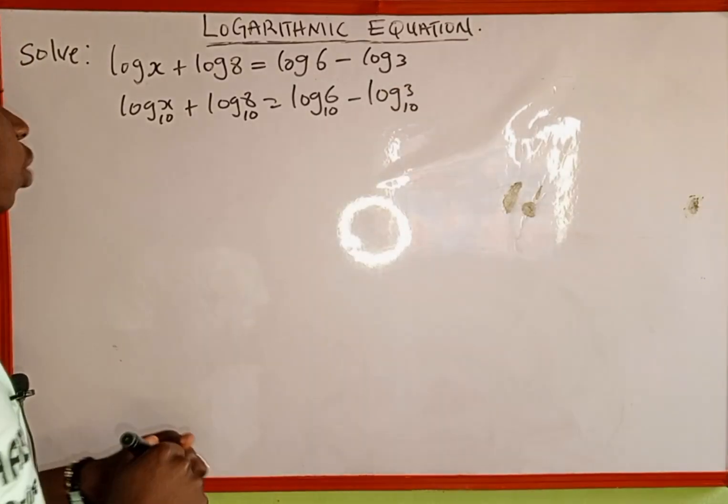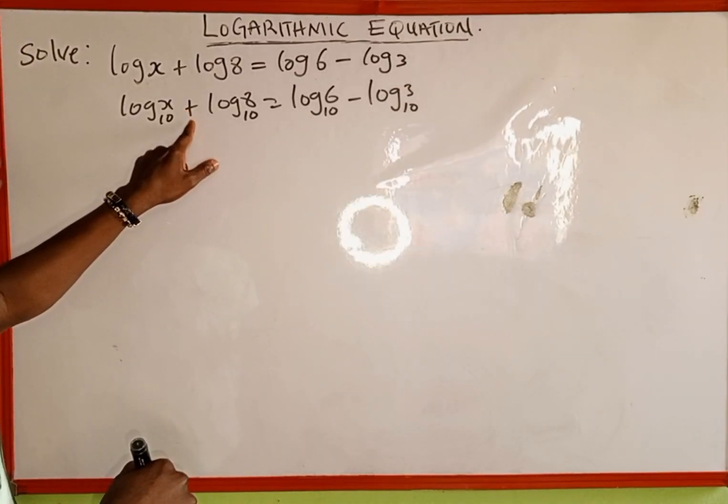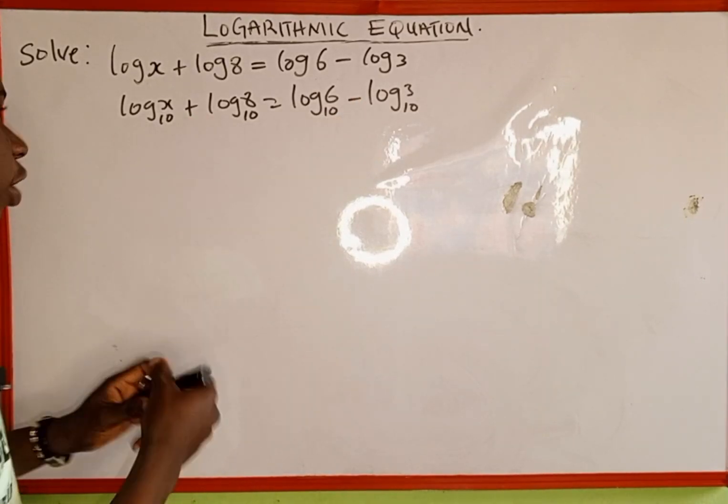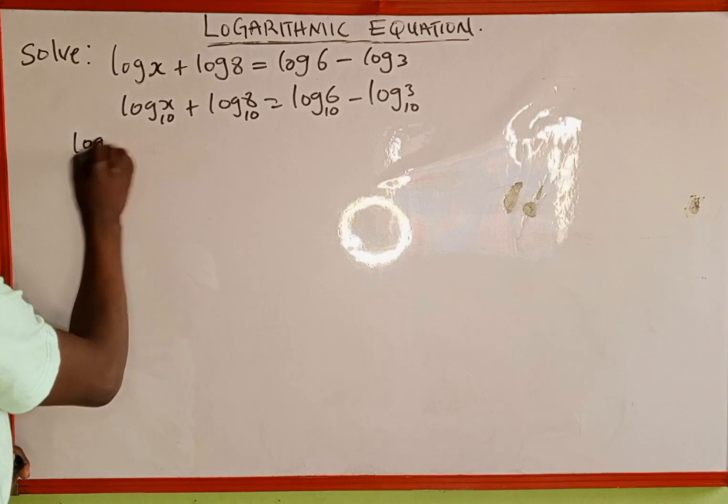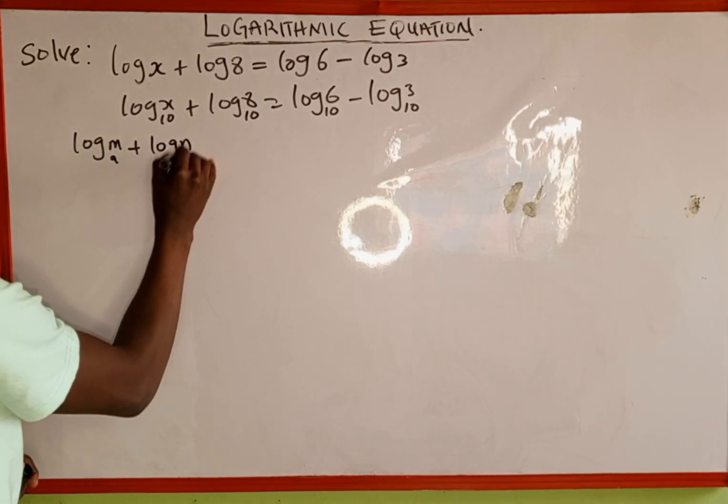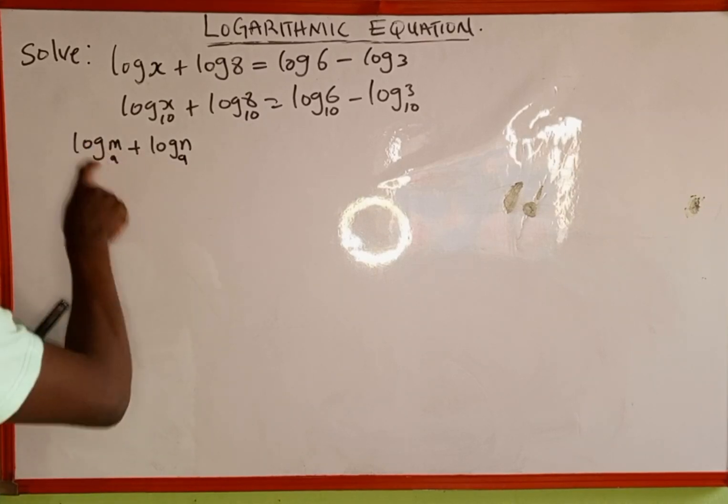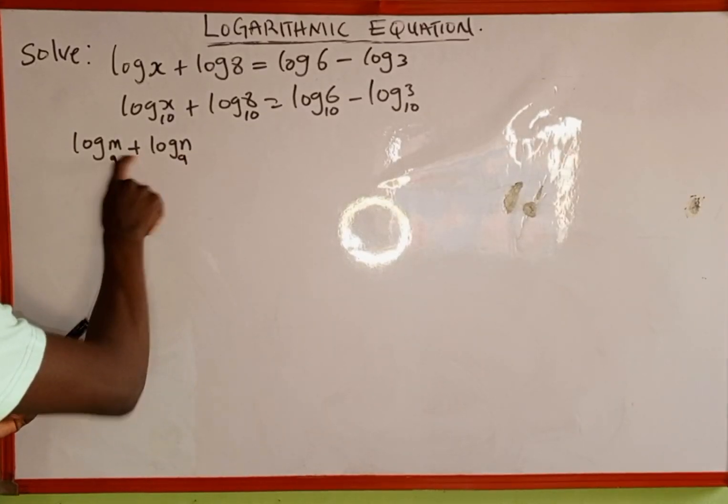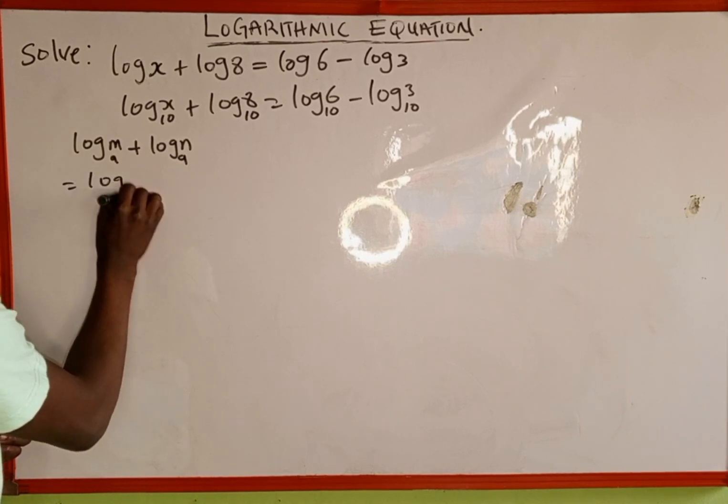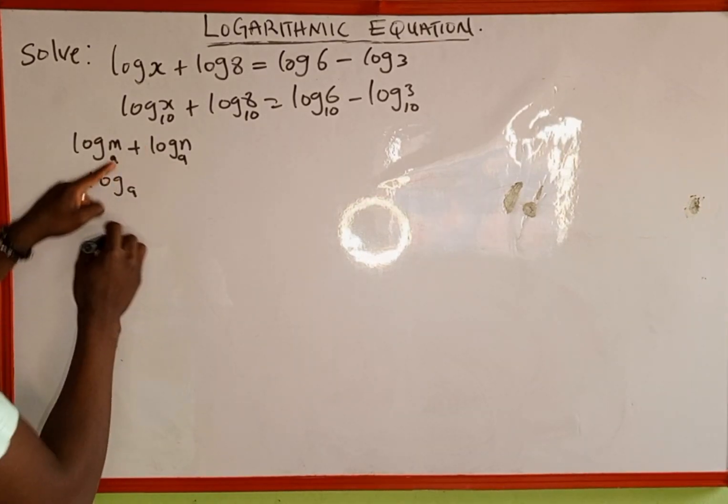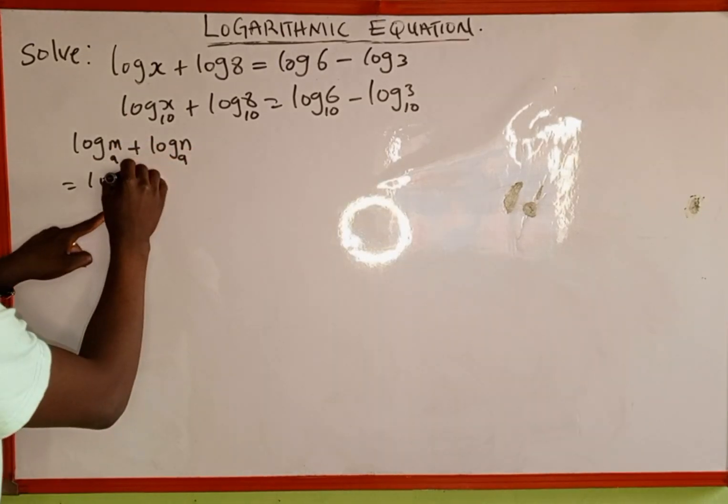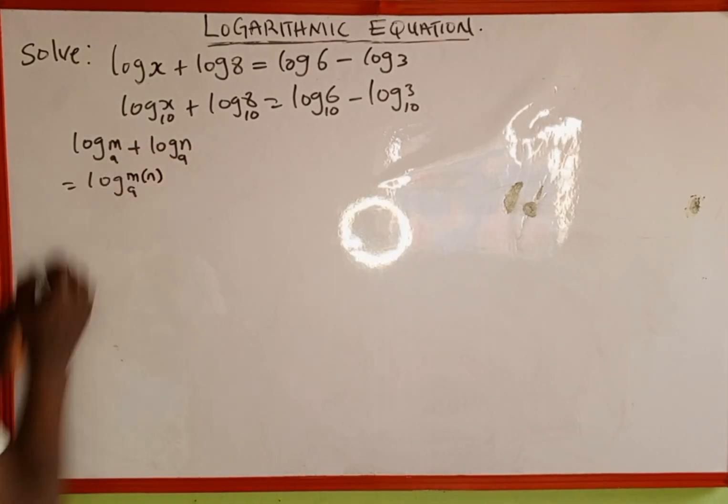Another thing we are going to recall is the addition property of logarithm and the subtraction property of logarithm. We have log of m to base a plus log of n to base a. Since we have log to base a, log to base a, and this is addition, then this is the same as log to base a. We write log to base a, then we multiply the two numbers m and n.